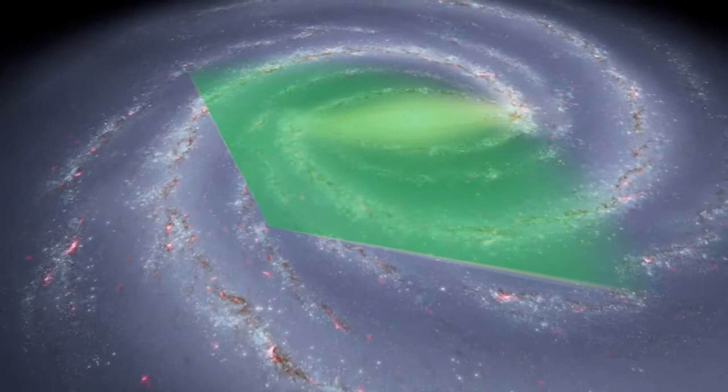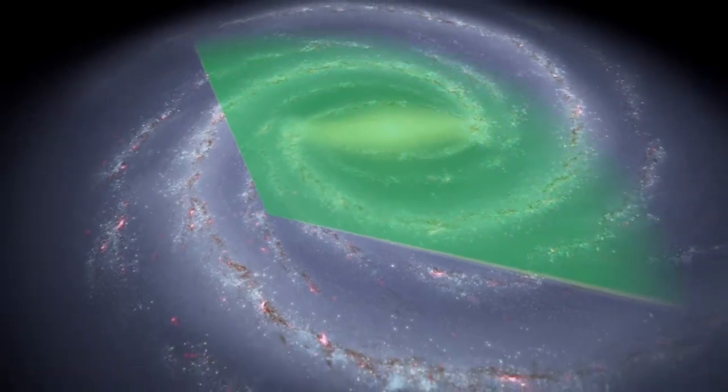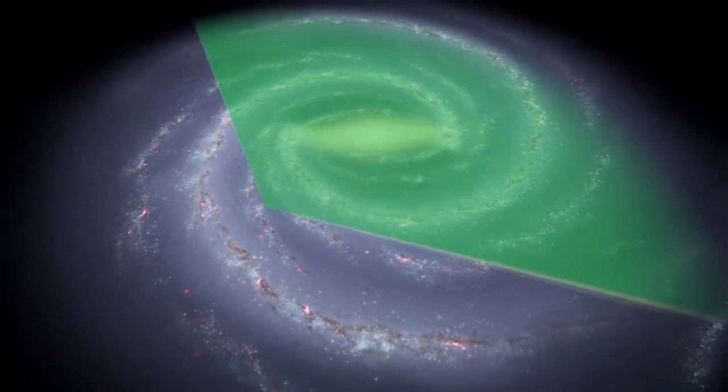Our Sun sits a ways out from the galactic center, so a 130-degree arc takes in most of its area.